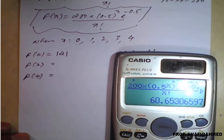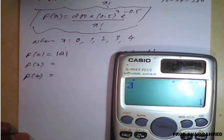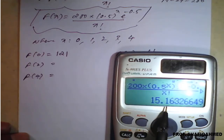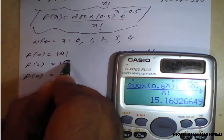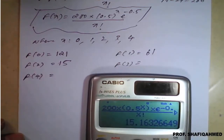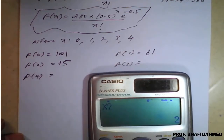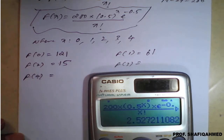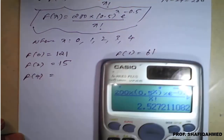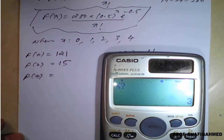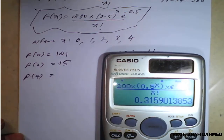Next, when X is equal to 2, it will be 15.16, so I will round it up to 15. Then when X is equal to 3, it will be 2.5, so I will round it up to 3. And for X equal to 4, I will make it as 0.16.